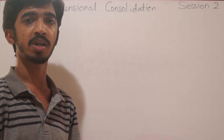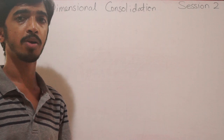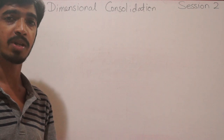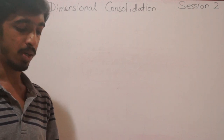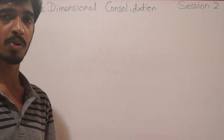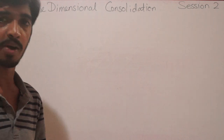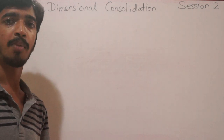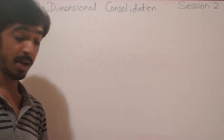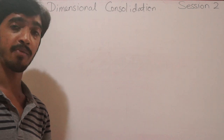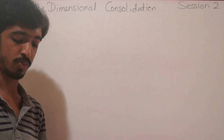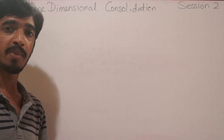Welcome to the Dr. Engineer channel. Today we are going to continue what we did in the previous video — the one-dimensional consolidation settlement variation. As we discussed, we already know what consolidation is: it is a process by which the soil settles by expelling the water in it without any replacement. Today we are going to see about the settlement variation in the soil from the time it has formed.